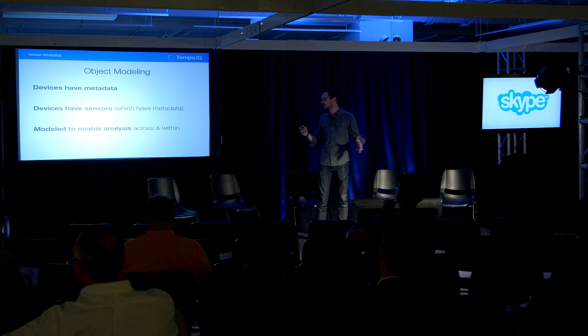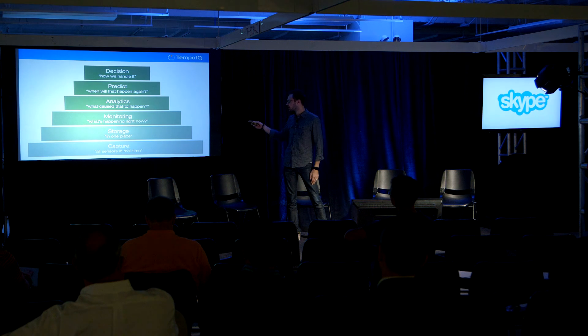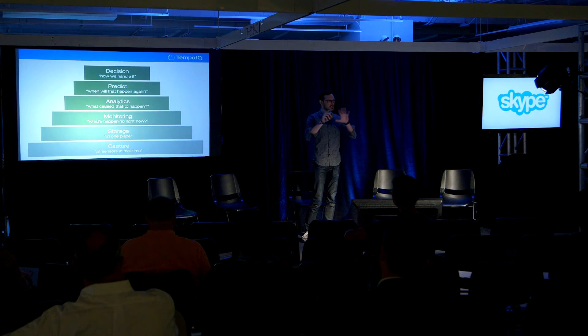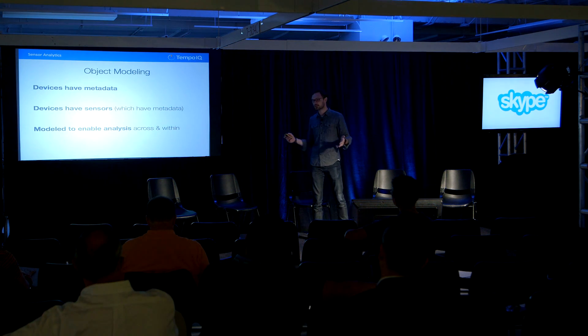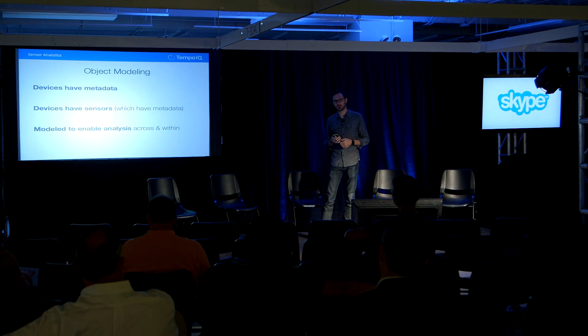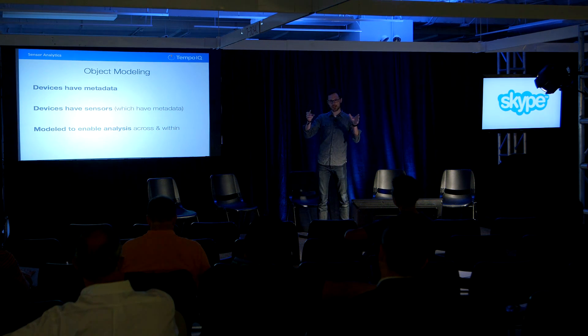Now I'll work through each of these levels and decompose what's actually in them. First, if you're going to capture data, you have to model it in the ways I described — your devices have metadata like floor seven, building X. Your devices have sensors; the Nest thermostat, for example, has temperature, pressure, light, sound, motion — all these different sensors. So you have a hierarchy: a device has N number of sensors, and those sensors have metadata such as units — is it Celsius or Fahrenheit?